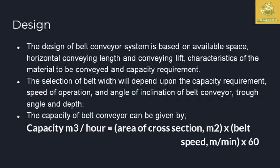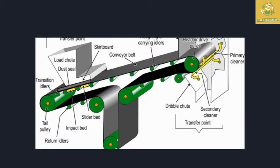The capacity of the belt conveyor can be calculated as: capacity in cubic meters per hour equals area of cross-section in square meters multiplied by belt speed in meters per minute, multiplied by 60. This is how we calculate the capacity of the belt conveyor. Here is a picture of the belt conveyor showing the idlers and pulleys at the two ends.